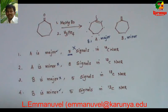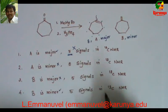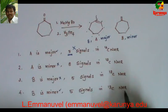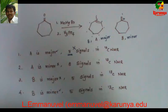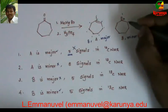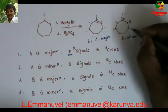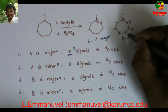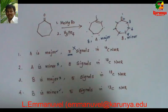What about the fourth statement? B is minor and it will give five signals in C-13 NMR. Counting the signals for compound B: 1, 2 — this and this are the same, this and this are the same — so we get five signals. So this statement is correct.